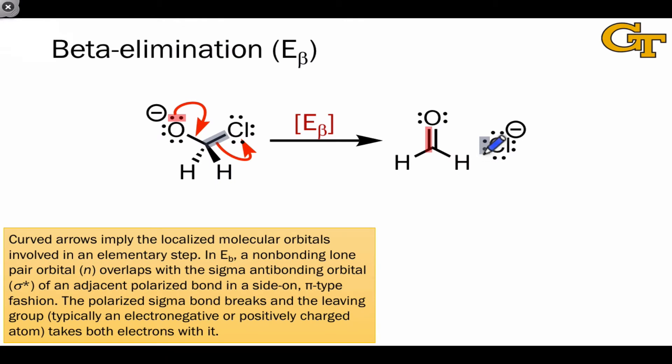Beta elimination is the reverse of nucleophilic addition, which is most obvious if we try to run this step in reverse by coordinating the chloride anion to the carbon of the carbon-oxygen pi bond, pushing the electrons up to oxygen, which generates this product.